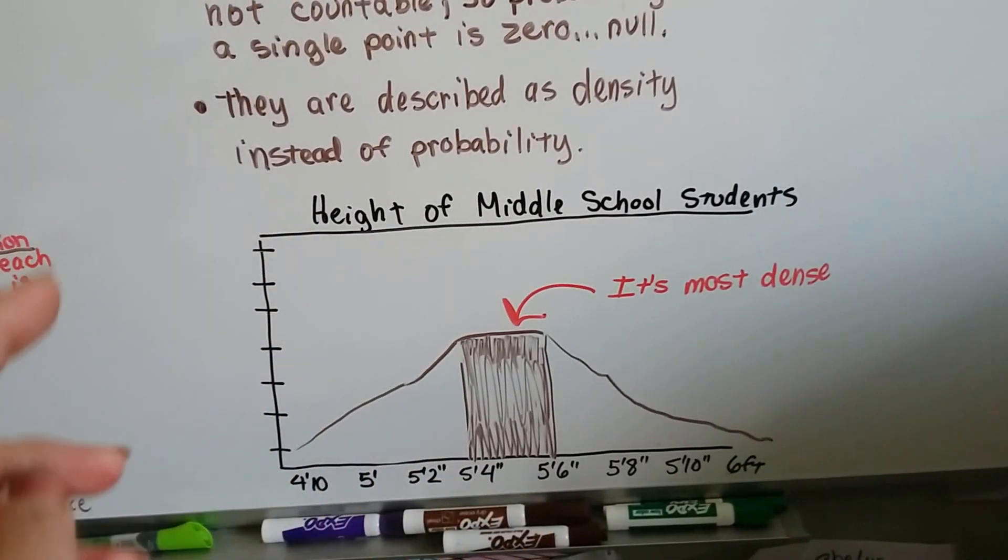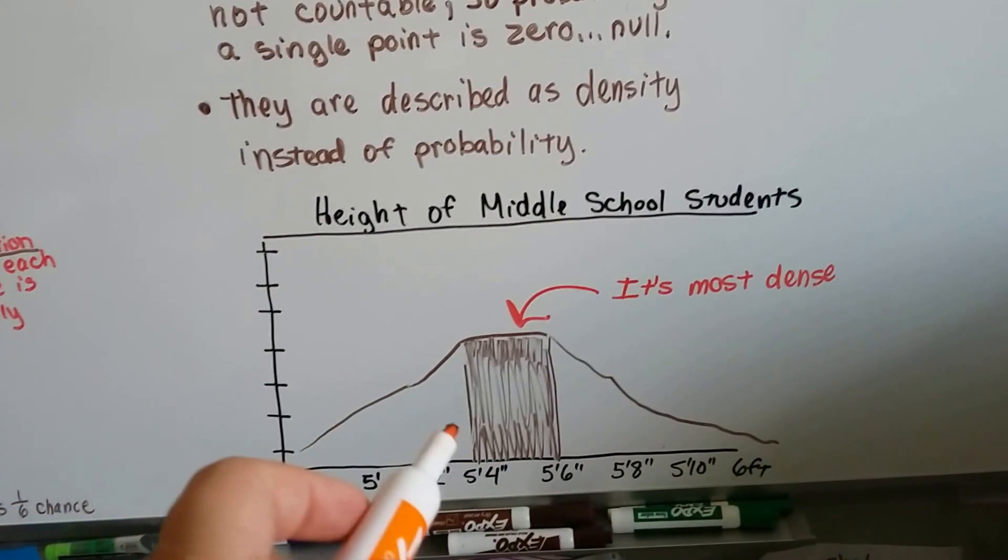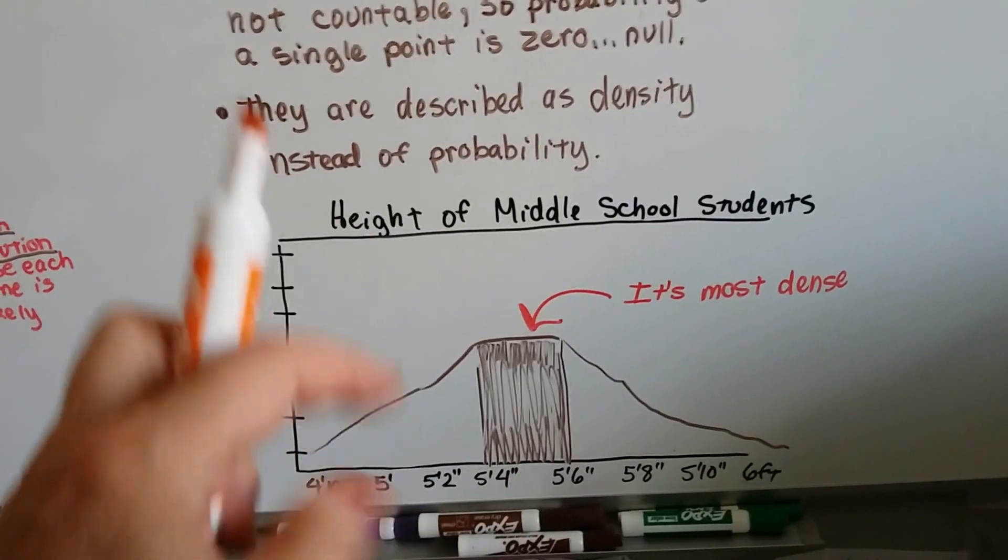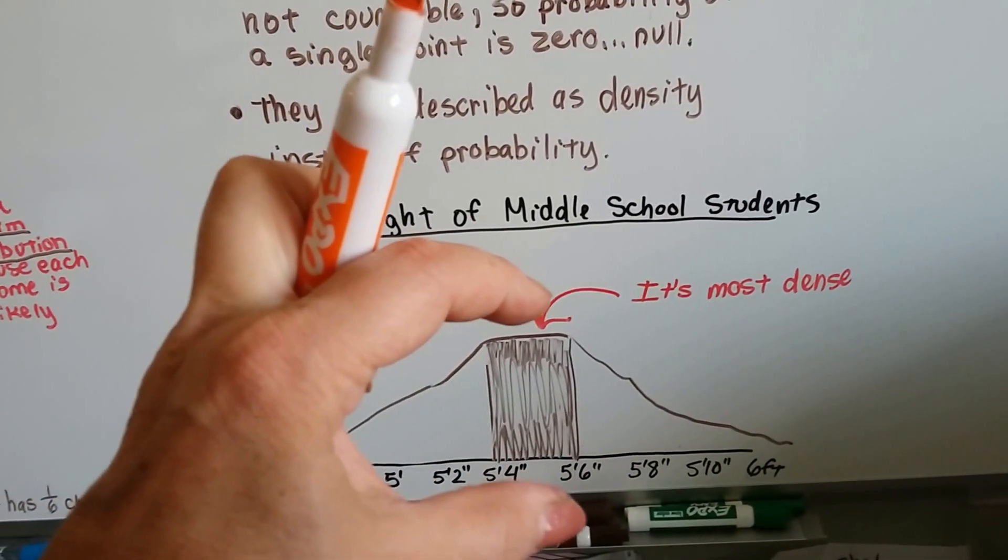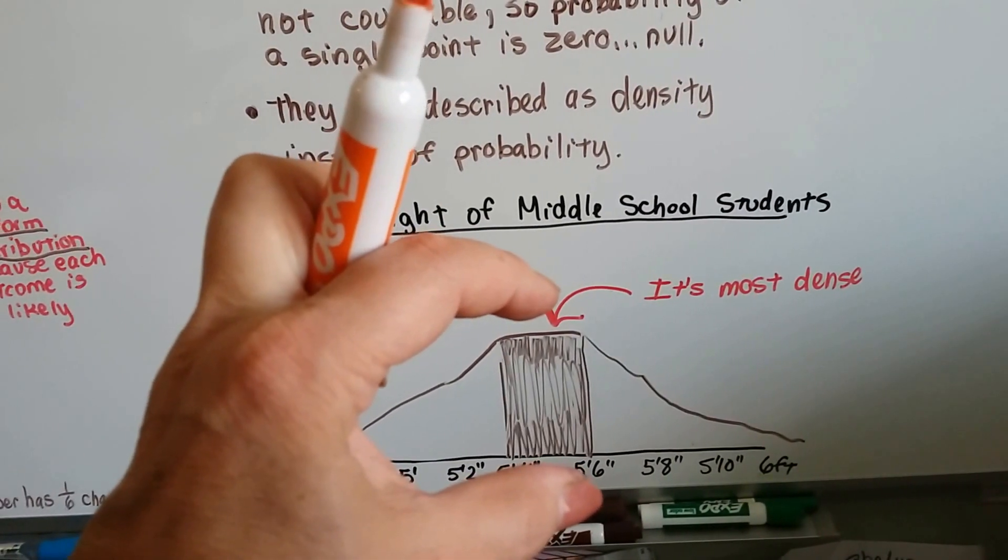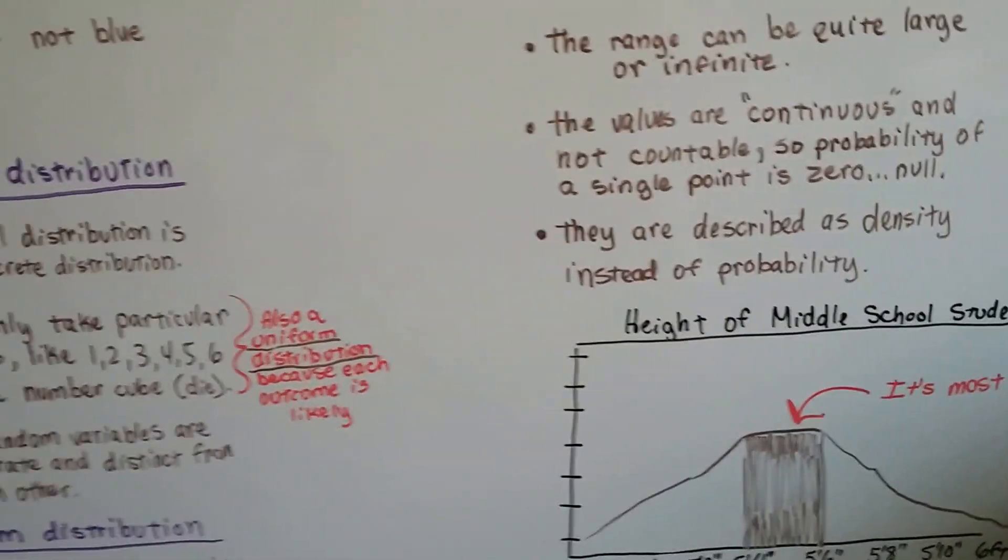And it doesn't pinpoint any particular height. It doesn't say that it's 5'5 and 3 tenths. It just says that in this range is the most. So that would be continuous distribution.